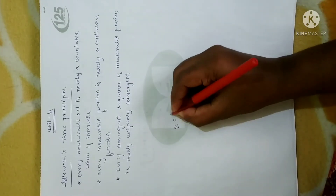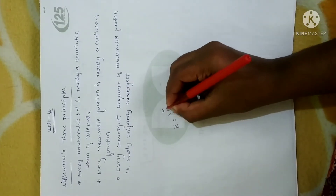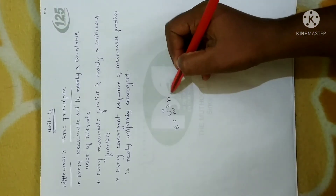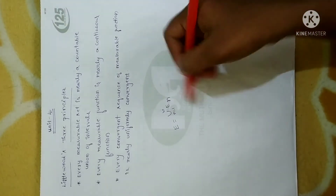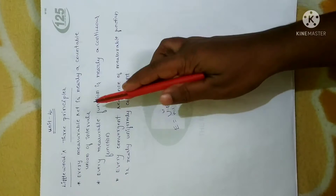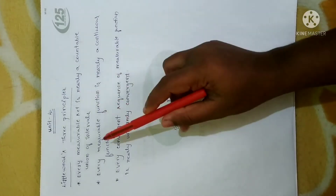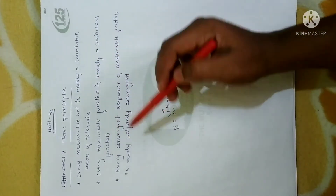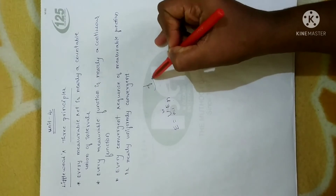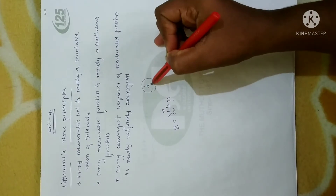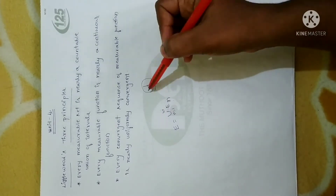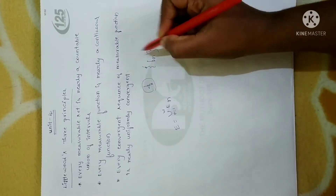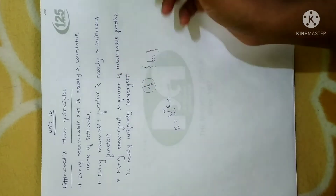Suppose if E is measurable, we can express it as a countable union of open intervals. Now the second principle: every measurable function is nearly a continuous function. Suppose if F is continuous, then we can say F is measurable. And third: every convergent sequence — all three statements we have already proved.